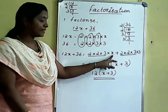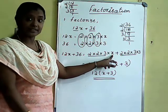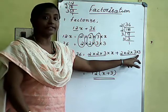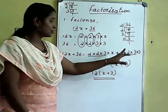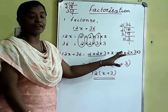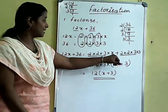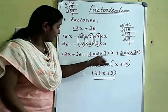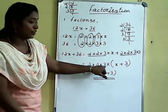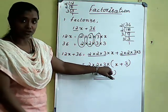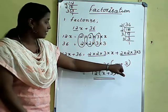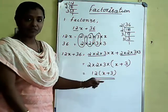The next one in this term exists here — the variable is here, and the next term is constant. The common factors are taken outside. That is: 2 into 2 into 3, then open bracket, that is x plus 3.